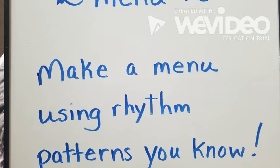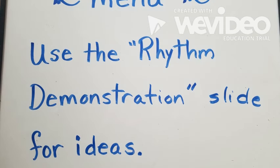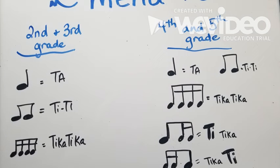So if all you have time to do is read those rhythms, that's great. Do it two or three times. Get them in your head. You can even make up some with foods that you like that aren't on this menu and see if you can make up some rhythms. Otherwise, we're going to go on and make a menu using rhythm patterns that you know. I would highly suggest that you use the rhythm demonstration slide I just showed you for your ideas. I think it would be okay for second and third grade to stick with ta, titi, and ticca ticca — those are typically found on the first and third rows of that slide with the food pictures on it — and fourth and fifth grade can do them all.